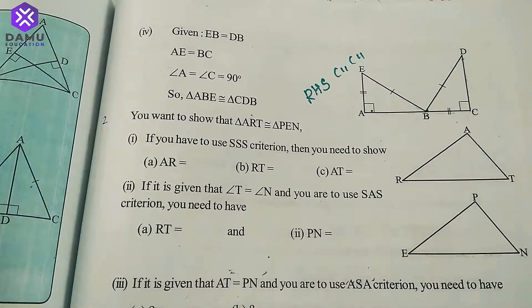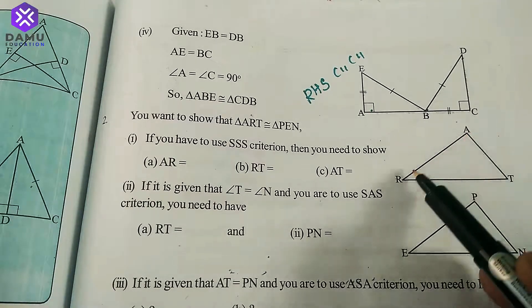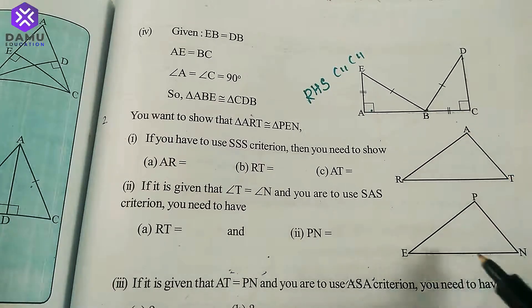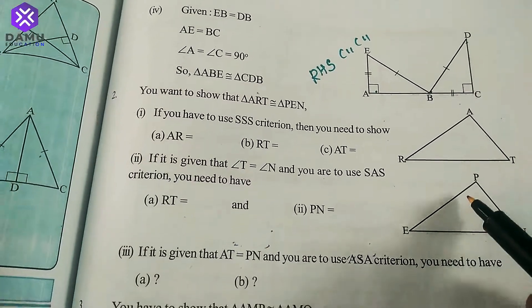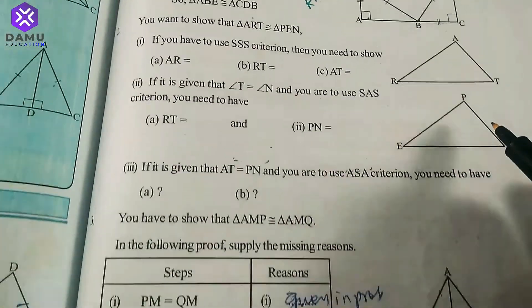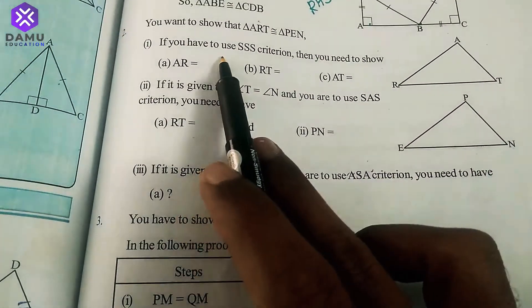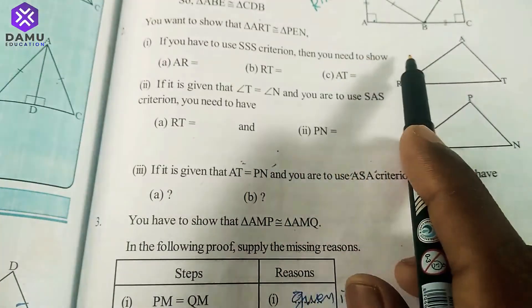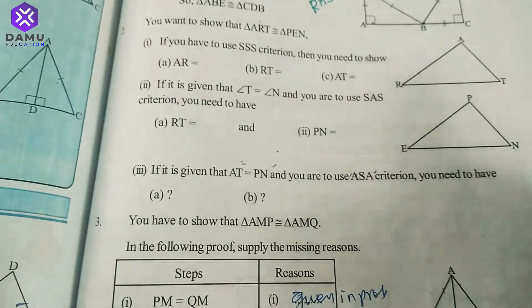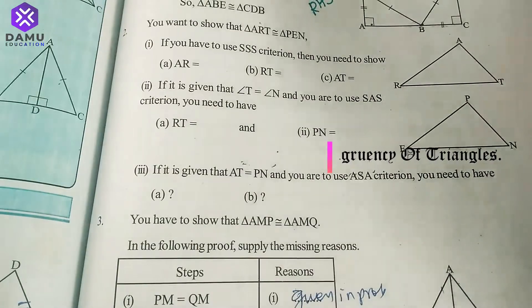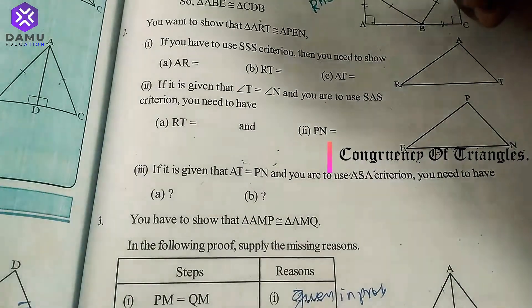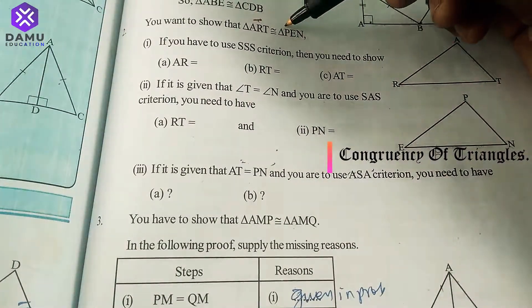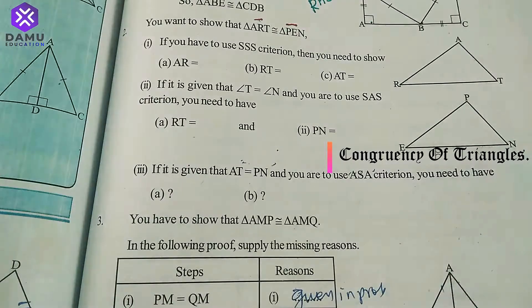Next question: you want to show that triangle ART is congruent to triangle PEN. If you have to use the SSS criterion, you need to show corresponding sides are equal. Take the first two letters, then the next two letters in the corresponding triangle — AR = PE, RT = EN, and AT = PN.